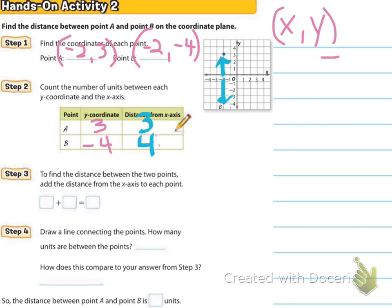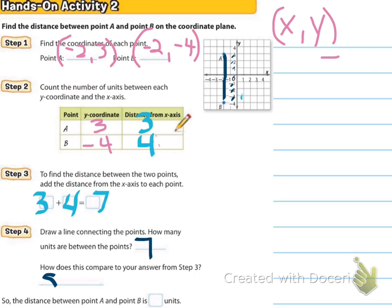To find the distance between the two points, we add the distance from the x-axis to each point: three to zero is three, and zero to negative four is four. We add those together and get seven. Drawing a line connecting the points and counting each unit — one, two, three, four, five, six, seven — there are seven units, and the distance between point A and point B is seven units.